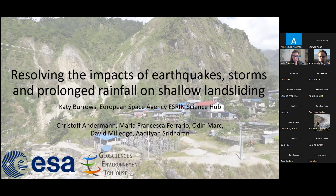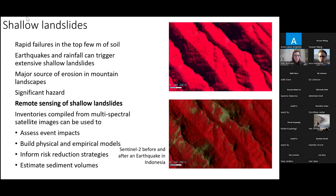I've listed some of my co-authors and collaborators that have worked with me on the work I will present today. As you can guess from the fact that I work at the Space Agency, this talk is going to be very heavy on remote sensing and extremely light on field work. So, shallow landslides — when we talk about shallow landslides we're talking about rapid failures occurring in the top few meters of soil. Earthquakes and rainfall like storms can trigger shallow landslides across very wide areas, which is a major source of erosion in mountain landscapes and poses a significant hazard to communities in these areas.